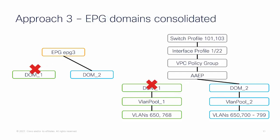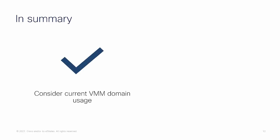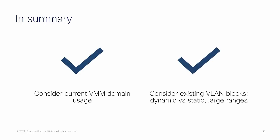A third approach is to consolidate the EPGs to a single domain where applicable. This approach may not be feasible if utilizing multiple VMM domain integrations. In summary, there are a variety of considerations to keep in mind during the correction process, including VMM domain usage and existing VLAN block definition. Carefully analyzing the expected usage on a domain-by-domain basis will ensure a smooth correction process.